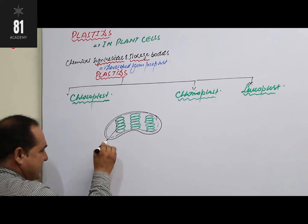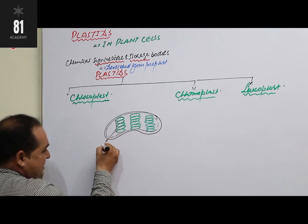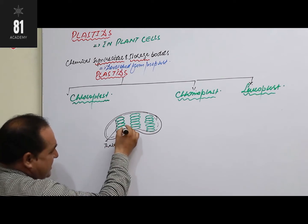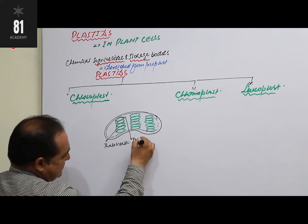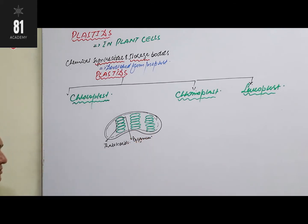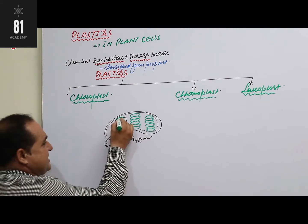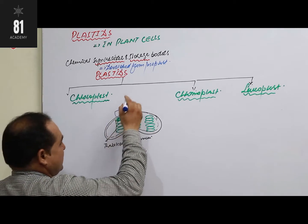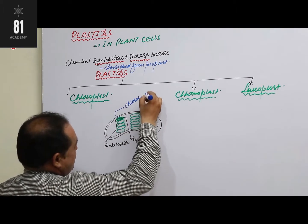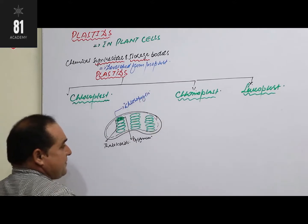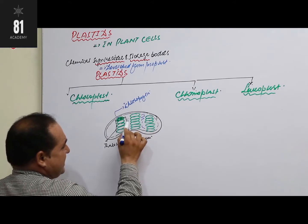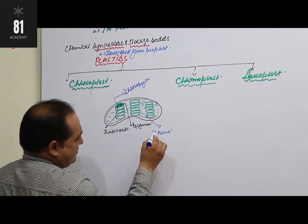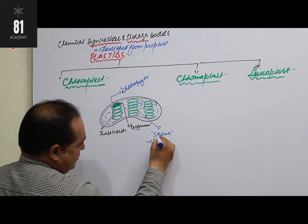The stalk-like structures are called thylakoids, and the sac-like structure is called a thylakoid. A stack of thylakoids is called a granum. Inside the granum there are hundreds of chlorophyll molecules. The fluid region surrounding the grana is called the stroma. Inside the stroma there are lipid globules.